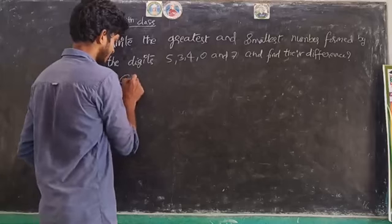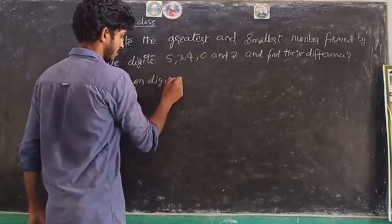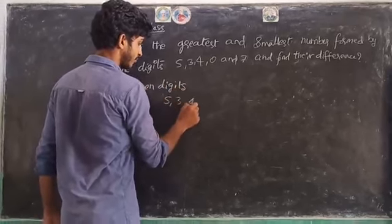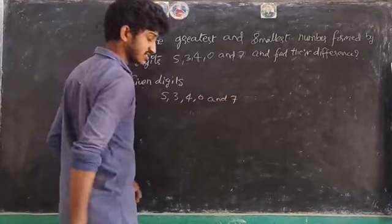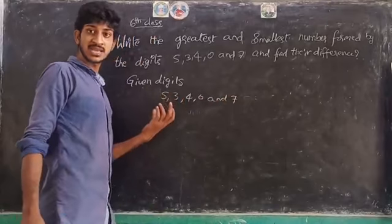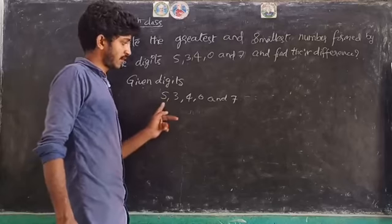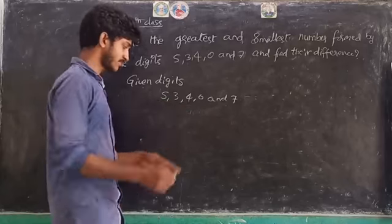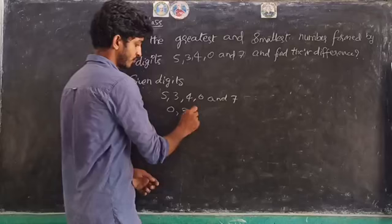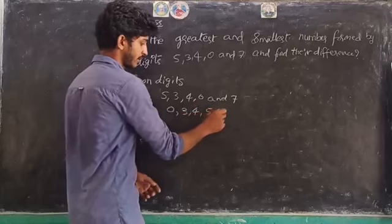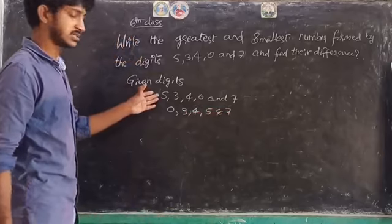Given digits: 5, 3, 4, 0, and 7. First of all, arrange these numbers in ascending order. Ascending order means smallest to largest. Among these 5 numbers, the smallest is 0, and the ascending order is: 0, 3, 4, 5, 7.